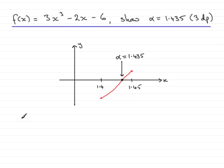In other words, the lower bound for 1.435 would be 1.4345. And what we need to do is substitute this value of x into the equation. So we need to calculate f of this value and see what we get.